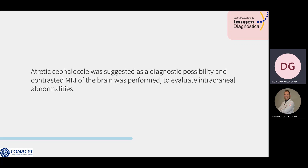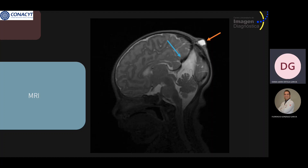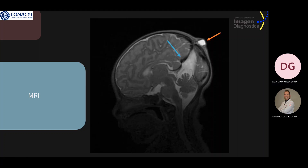An atretic cephalocele was suggested as a diagnostic possibility and contrast MRI of the brain was performed to evaluate the intracranial abnormalities. The T2-weighted images show, indicated by the orange arrow, an extracranial lesion hyperintense on T2 with a small bone defect, and the blue arrow shows a vertically oriented persistent primitive falcine vein and adjacent fibrous stalks connecting the cephalocele through the calvarial defect.